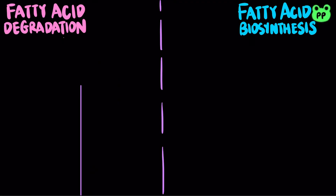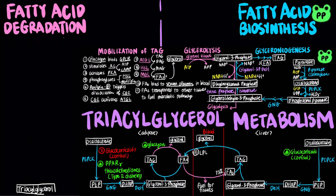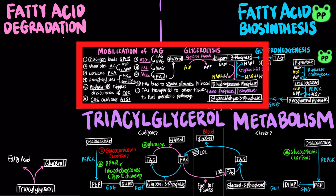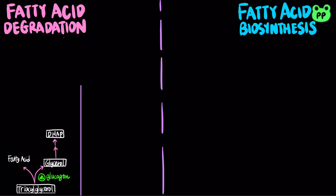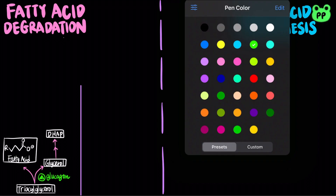Fat is an important fuel source in many organisms. As covered in a previous video on Triacylglycerol Metabolism, fats or triacylglycerols can be mobilized in an adipocyte by the hormone glucagon, releasing free fatty acid and glycerol. Glycerol undergoes two reactions that enter glycolysis through dihydroxyacetone phosphate. This video will cover how fatty acid is oxidized to generate energy and resynthesized in anabolic pathways.